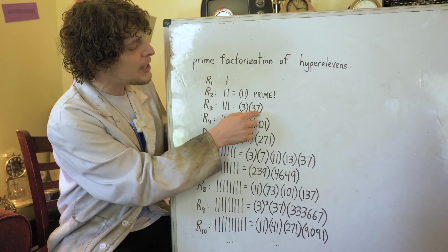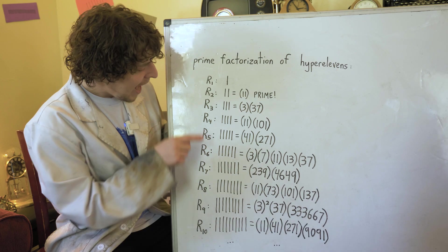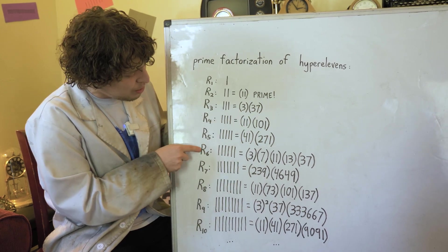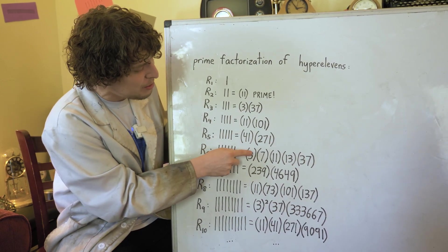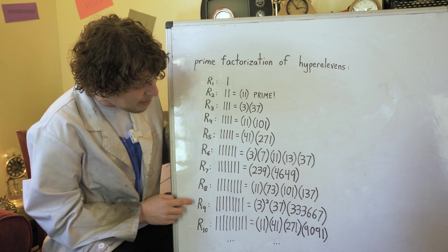R3 is made of 3 times 37. And all the future 3-ven rep units have a 3 and a 37 somewhere in there. They can evenly divide the third rep unit.